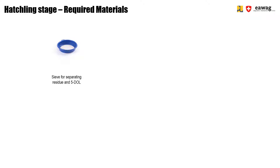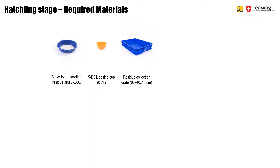We will now look at the operational steps of this process. For this stage — the hatchling stage — the following materials are required. First of all, we have a sieve, where we can separate the residue from five-day-old larvae. Then we have a dosing cup. We have a residue collection crate, which is basically the same crate as a nursery box. We need one extra to be able to collect the residue, but also to collect the larvae that we have counted and to be able to separate the different streams.